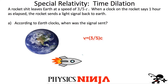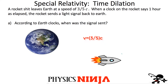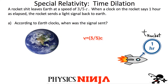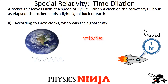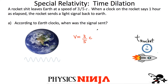So we've got our rocket traveling at three-fifths the speed of light. After one hour on the rocket's clock, it sends a signal back to Earth. The question is: according to Earth's clock, when was that signal sent? According to the rocket, it was sent one hour after it left. But according to Earth, which one is it? The key is to figure out which one measures the proper time and which one measures the dilated time.